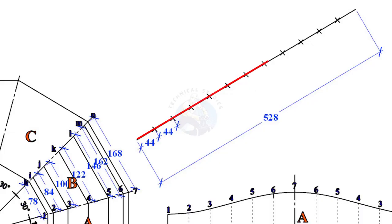Draw a line perpendicular to the line N7. The length of the line shall be 528 millimeters. Divide the line into 12 equal parts in the same way as before.